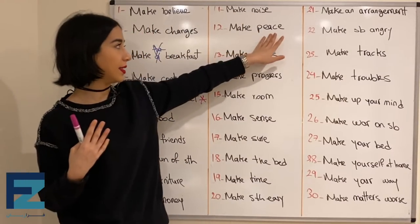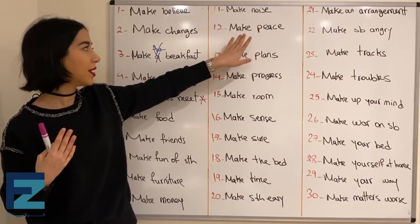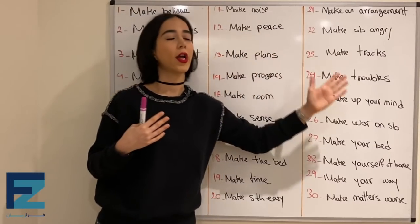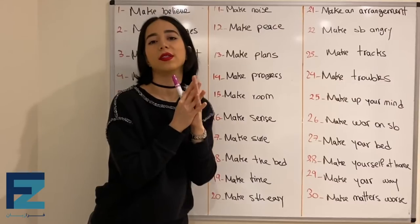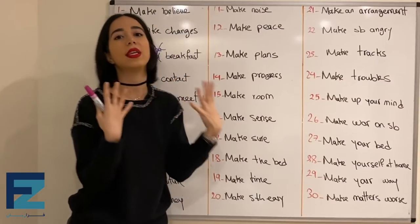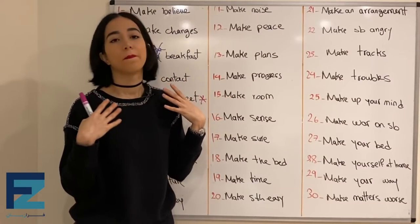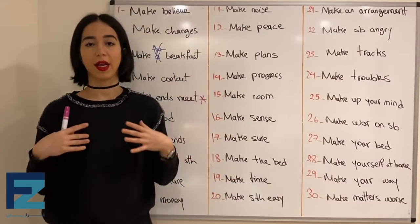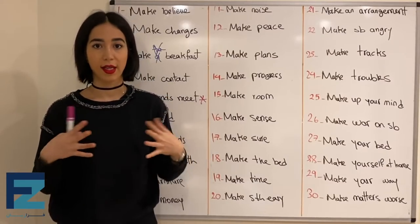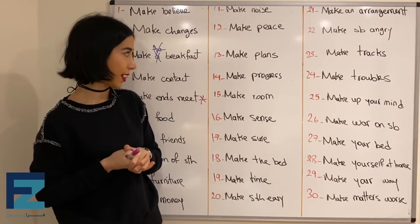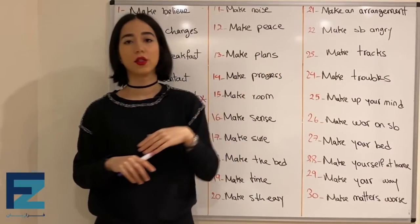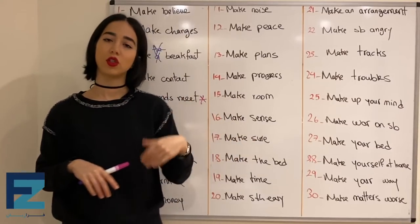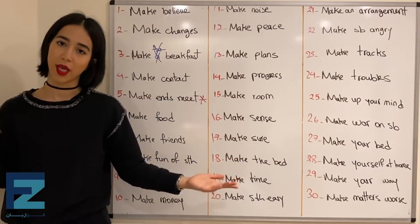Number twelve: make peace — to stop fighting, to be friends — صلح کردن، آشتی کردن. Number thirteen: make plans — to plan, برنامه‌ریزی کردن، برنامه تهیه کردن.